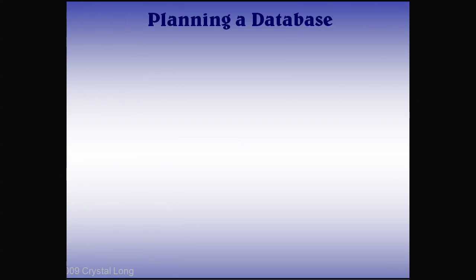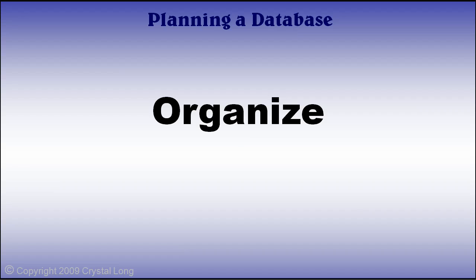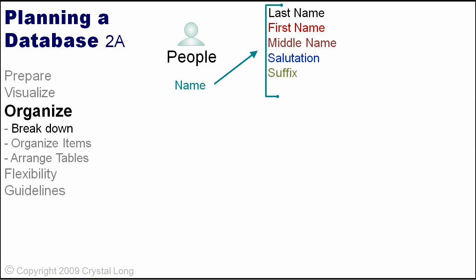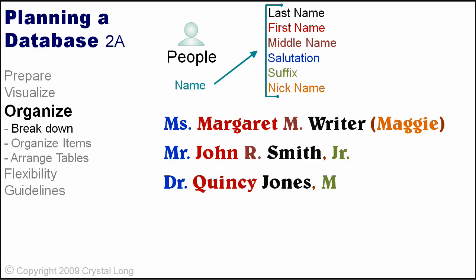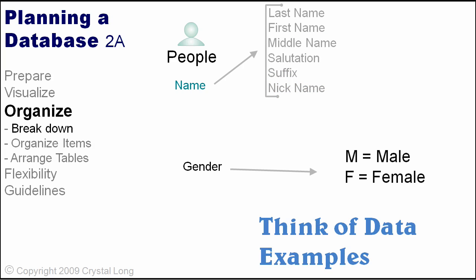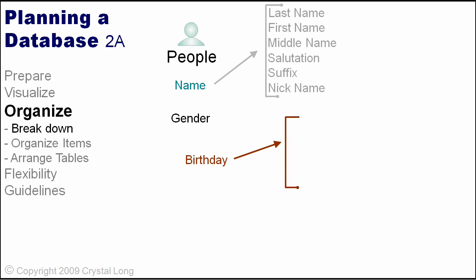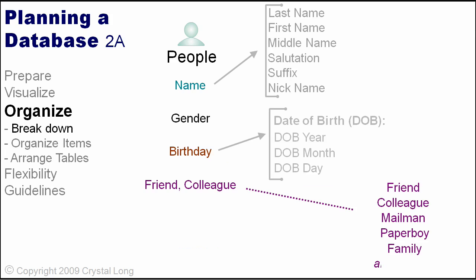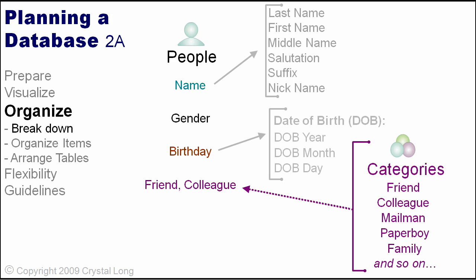One of the properties that describes a person is a name. A name has many parts — break them down. Store information distinctly. When you look at a name, see each part. Another property of a person is gender: male or female. Birthday does not describe a person; it is a property of an event. Since a person just has one birthday in their lifetime, it will help us identify who a person is. There are several ways we can categorize people. This also helps us find them easier, like the yellow pages of a telephone book.